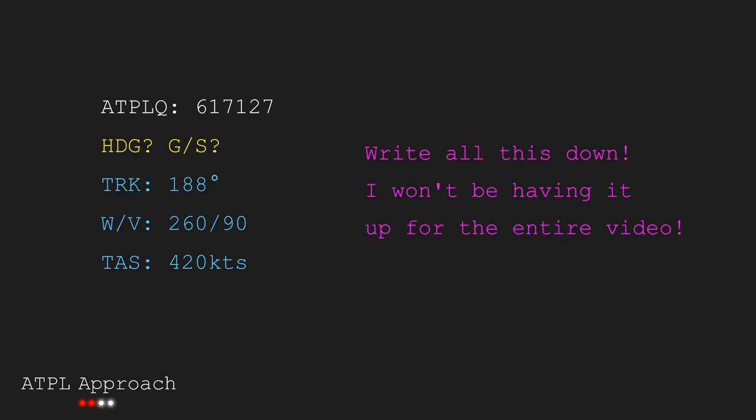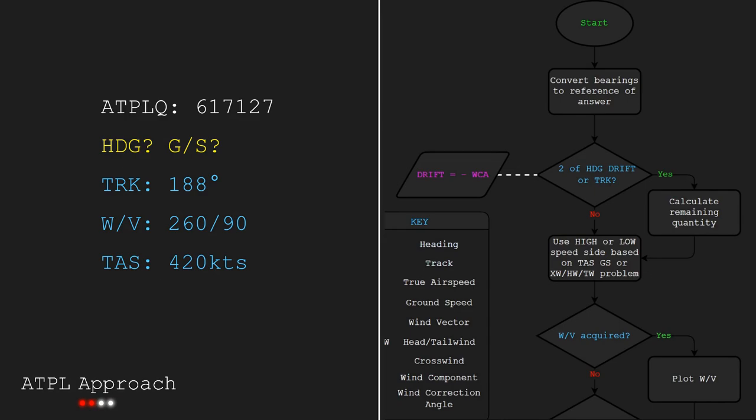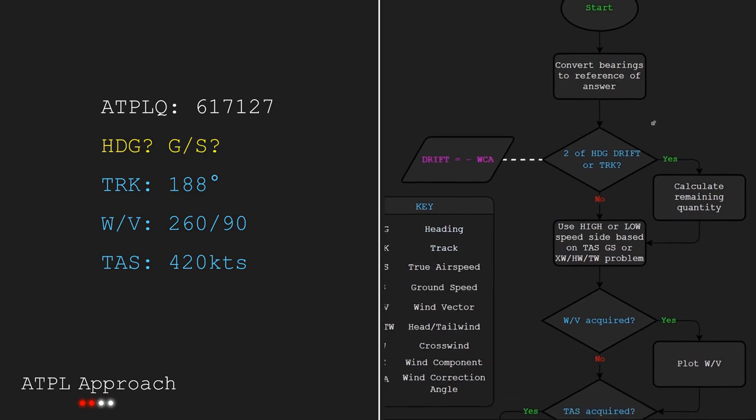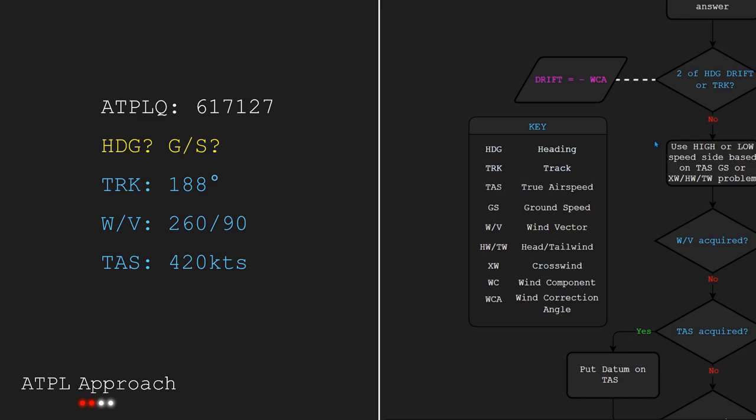Here we have another question from the banks. With a track of 188 degrees, wind of 260 degrees at 90 knots and a TAS of 420 knots, what is our heading and ground speed? So here's my beautiful flowchart. It can solve any windside ATPL or PPL question. I am going to reveal it slowly so it's not so scary and is easier to digest.